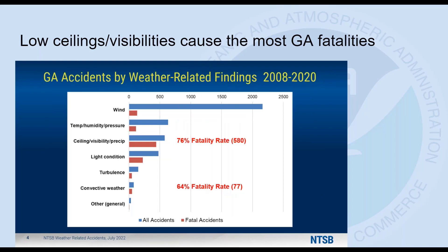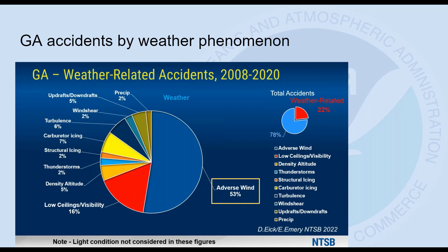If we break it down a little further, just from 2008 until about 2020, ceiling, visibility, and precipitation have been over 75% of the mortality rate. So that is really where the bad accidents are happening. Weather is also over 60-65% of the mortality rate. Wind causes a lot of accidents but they're not usually fatal. Looking at the far right side, weather-related accidents are about 22% of total accidents, with adverse winds and visibility accounting for a lot of that.